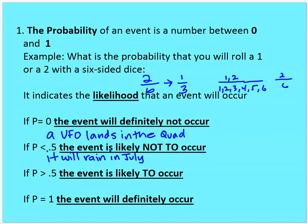I have two outcomes that meet the criteria — those are called the winners and go in the numerator. In the denominator, my total possible outcomes: 1, 2, 3, 4, 5, 6. So the probability that I'll roll a 1 or 2 with a six-sided die is 2 out of 6, or 1 out of 3.